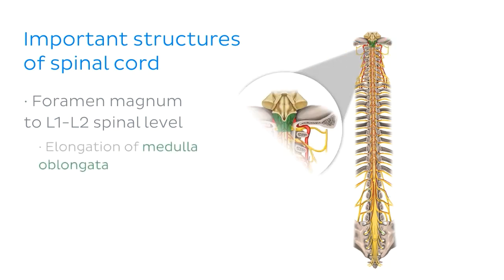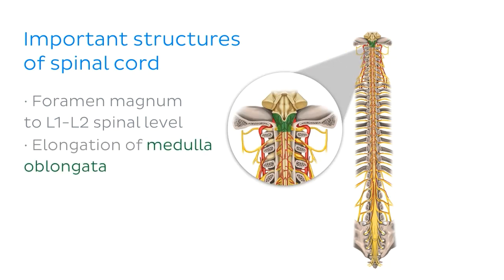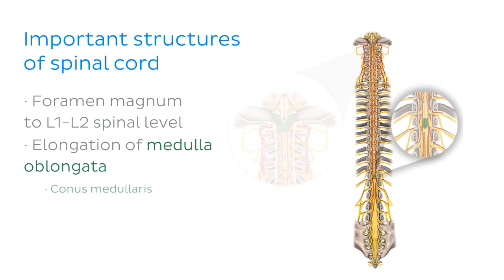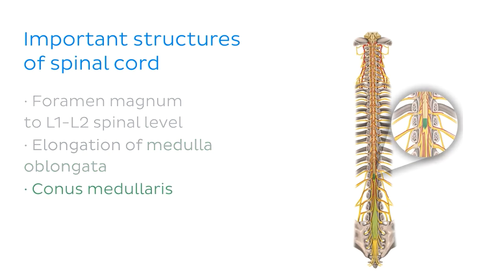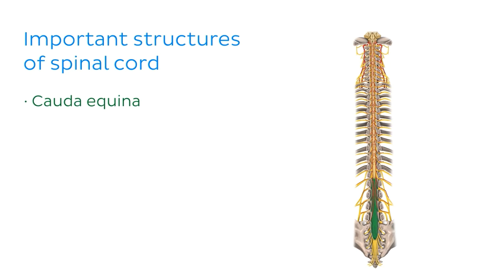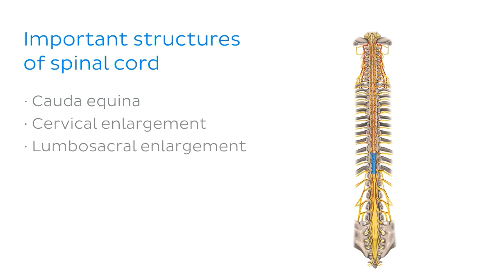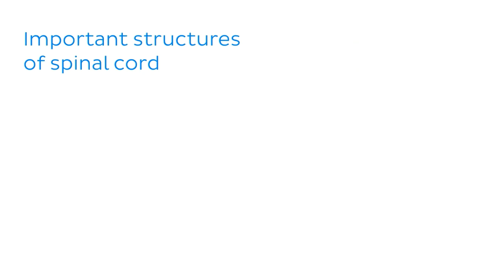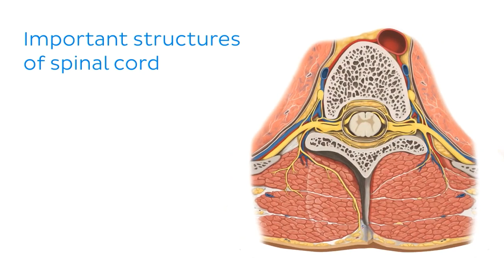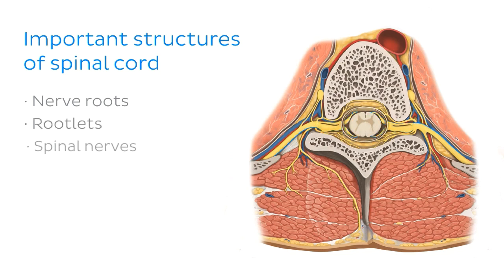The spinal cord begins as an elongation of the medulla oblongata of the brainstem and terminates as the conus medullaris. Below it, we find the cauda equina. There are two enlargements along the length of the cord — one in the cervical region and one in the lumbosacral region — and we'll learn why they're there later in this tutorial. At each vertebral level, a bilateral pair of nerve roots leaves the spinal cord via rootlets to form the 31 pairs of spinal nerves.